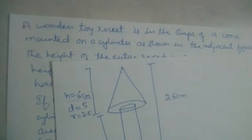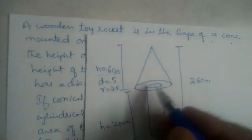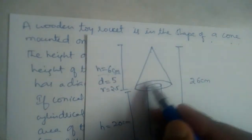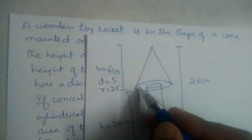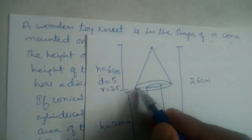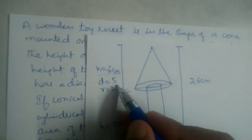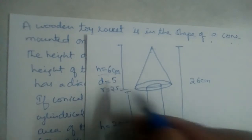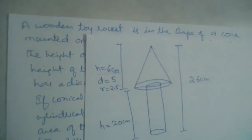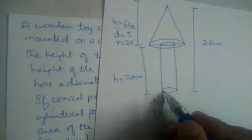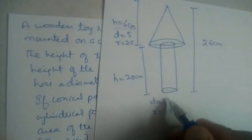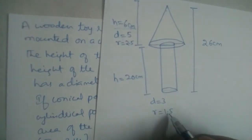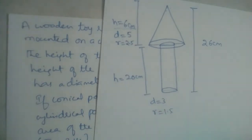The diameter of the cone is 5, so the radius will be equal to 2.5 — half of the diameter. The diameter of the cylinder is 3 centimeters, so the radius will be half of that: 1.5 centimeters.